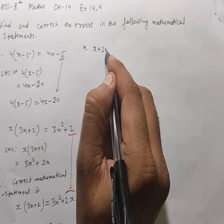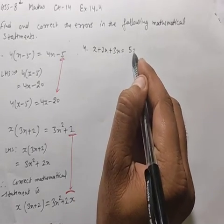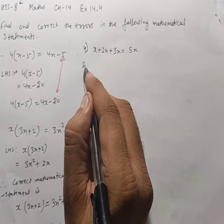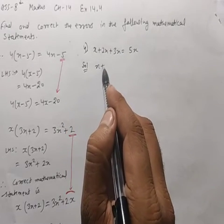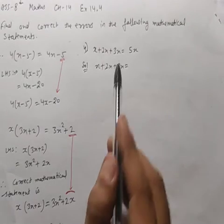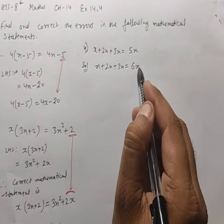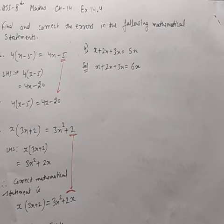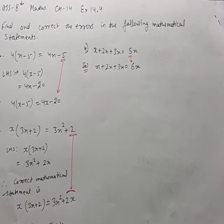Question 4: x+2x+3x = 5x is given. In the solution: x+2x+3x = 1+2+3 = 6, so it equals 6x. The correction is: replace 5 with 6, giving x+2x+3x = 6x.